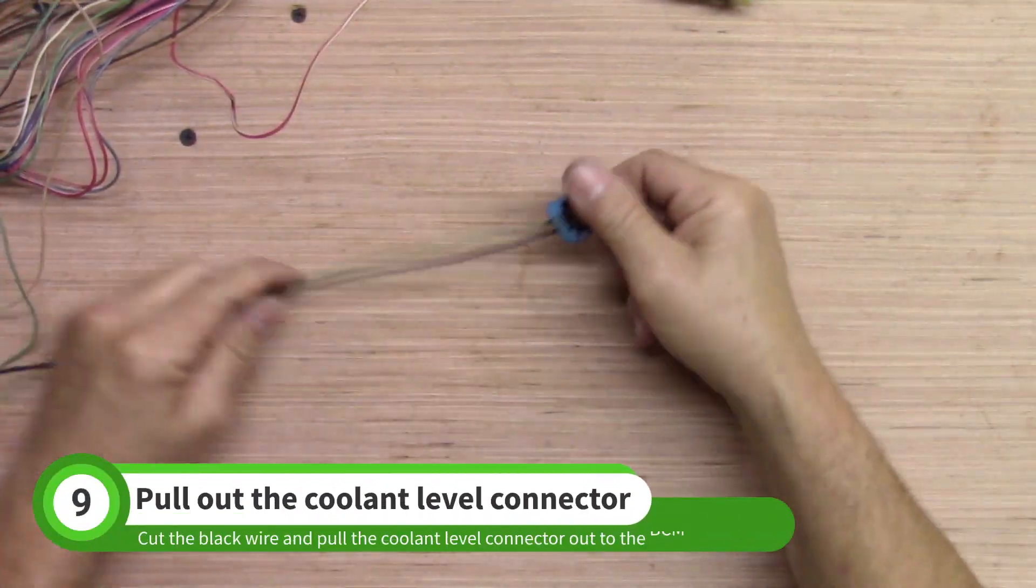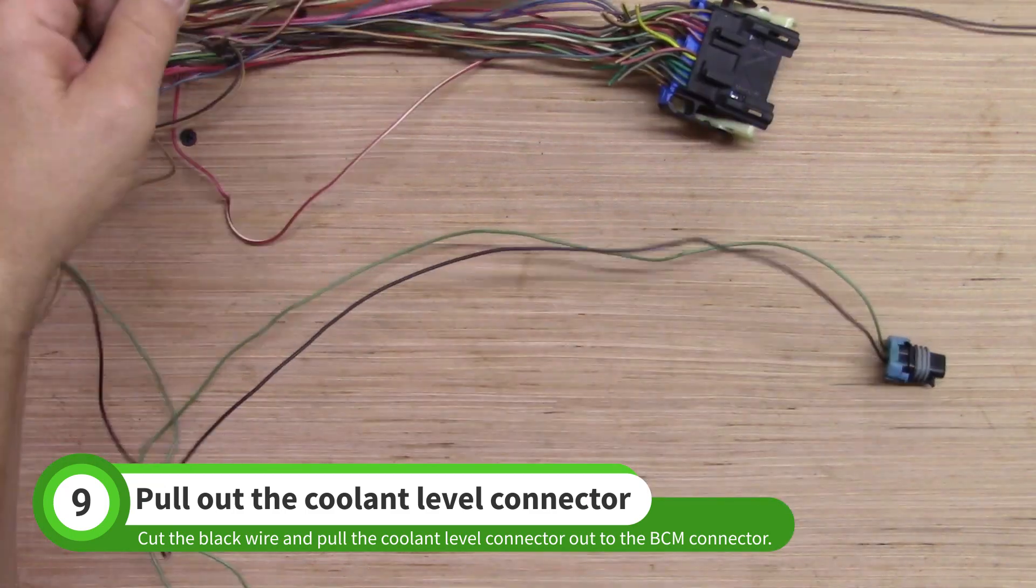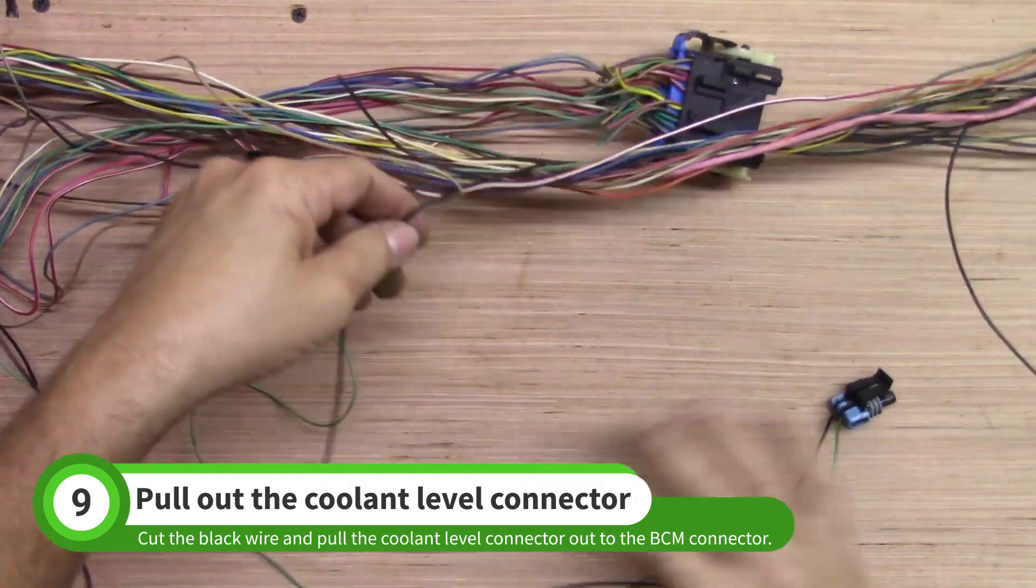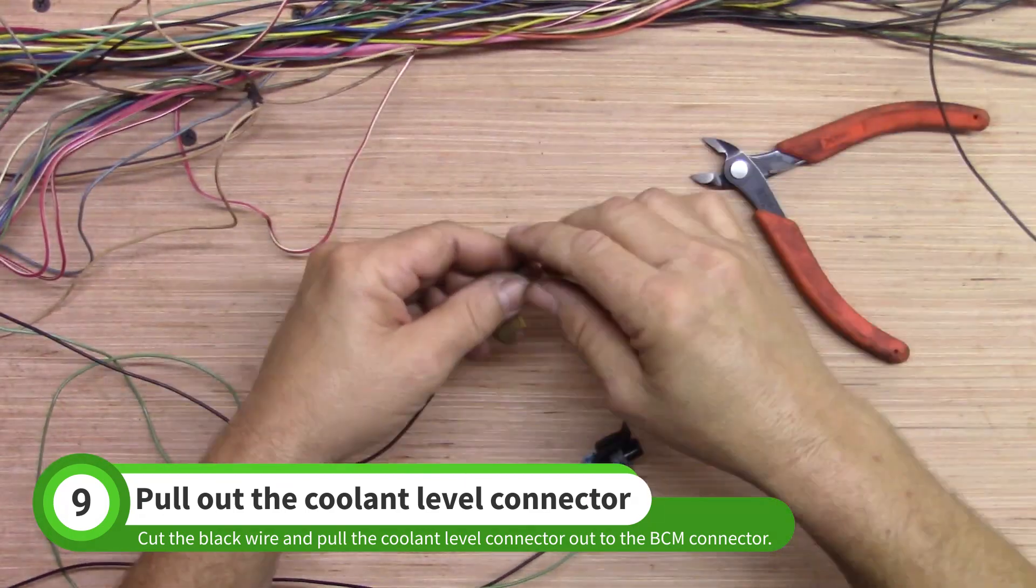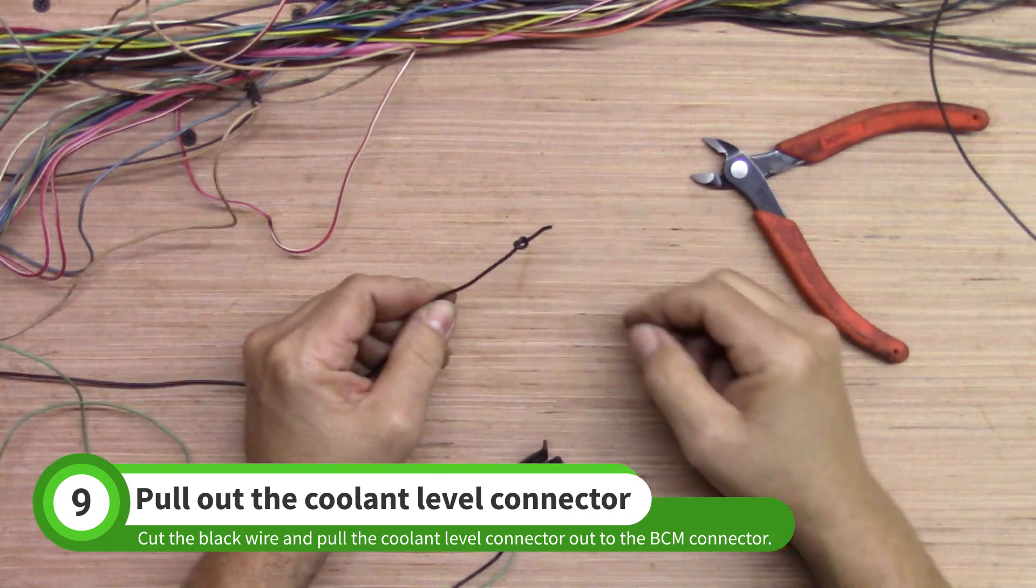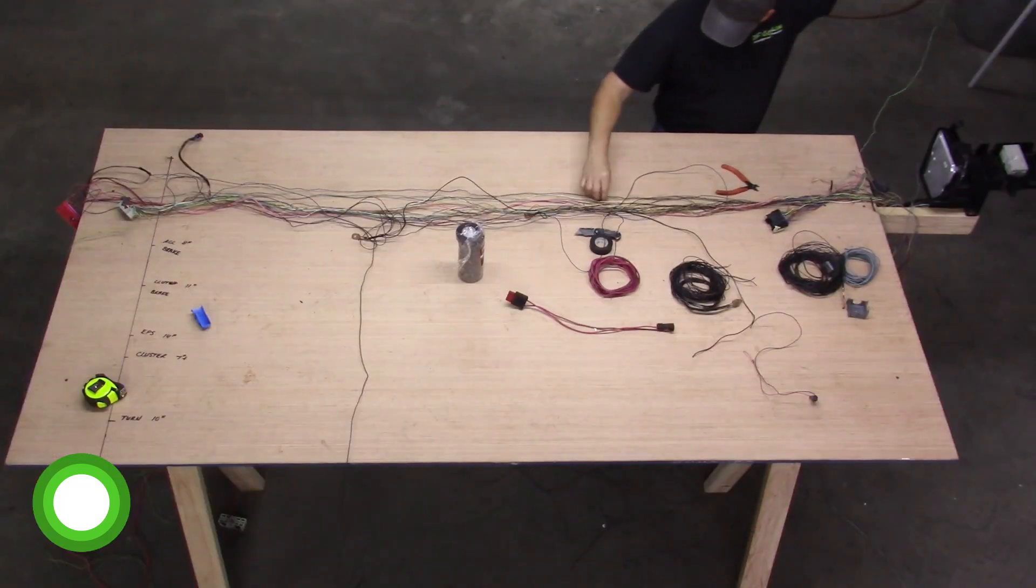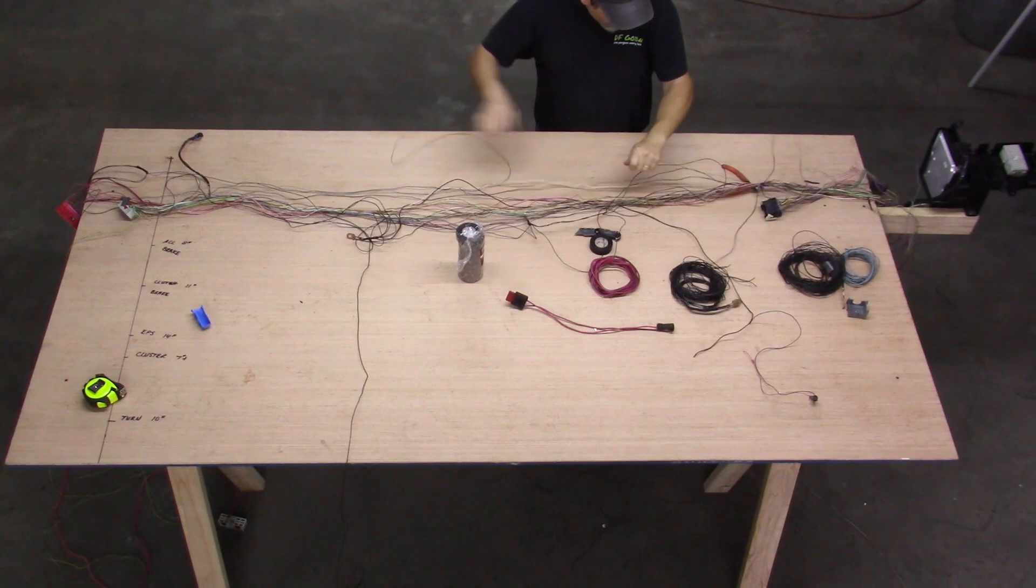Pull out a few feet of the black wire on the coolant level connector. Cut the wire and tie it in a knot. Work the connector and wires through the harness to the BCM connector.